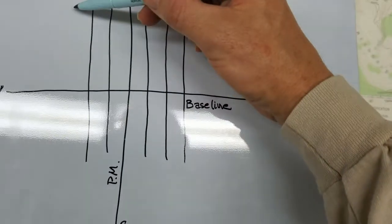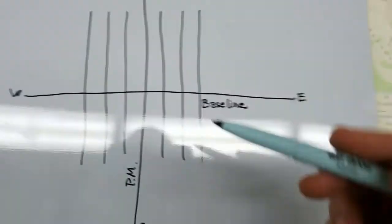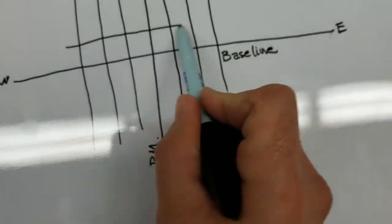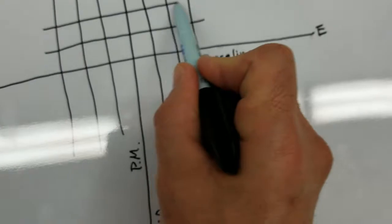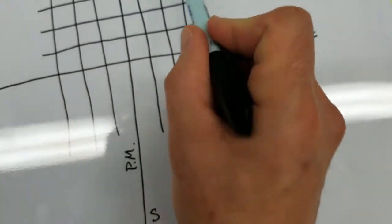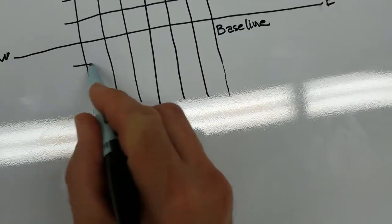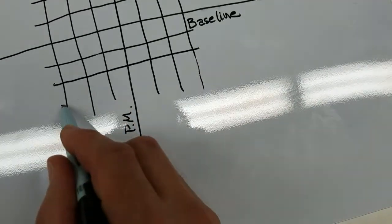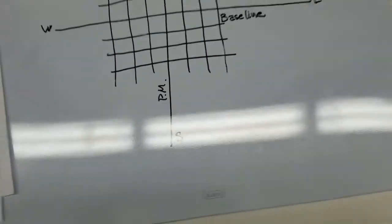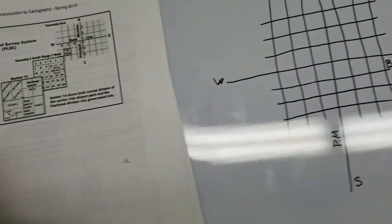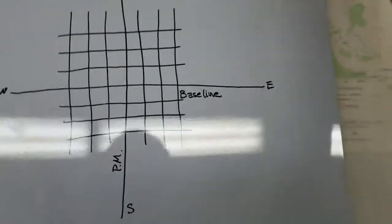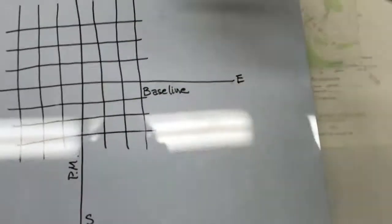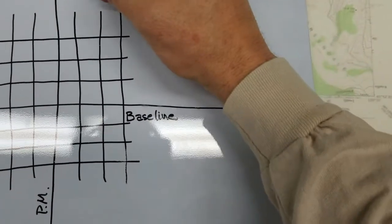Each one of these lines is six miles apart. These are my township lines, and the first ones I drew are my range lines. Each one of these cells is called a township, so this is my township grid.